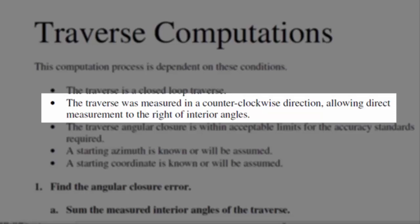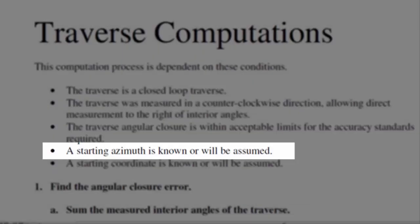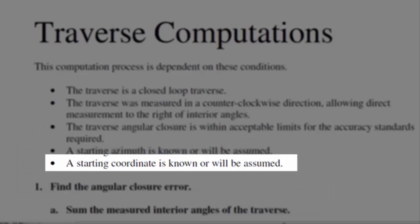We measure angles to the right, as is typical, and when we do this moving counterclockwise around the loop, we're going to be measuring interior angles directly. We're also assuming that angular closure is within acceptable limits. Then we're going to need a starting azimuth that is known or assumed — sometimes we may assume something and adjust it later. We'll also need a starting coordinate to be known or assumed.